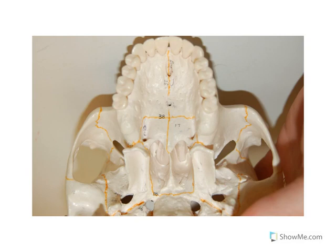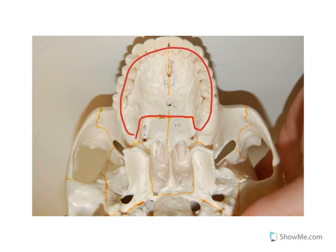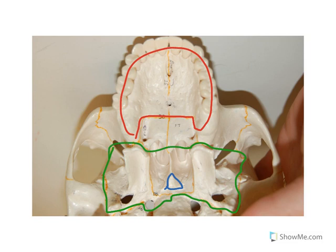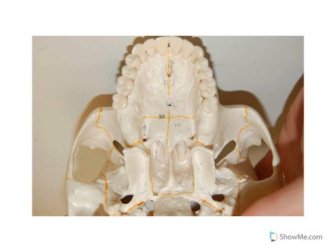In this lesson I want to discuss the bones of the skull that we can see from an inferior view, looking at mostly the hard palate. A few bones that we can see here from the bottom: the maxillary bone, the vomer, the sphenoid — we can see this part of the sphenoid in here — and the zygomatic bone, which we can see from an inferior view here and here.